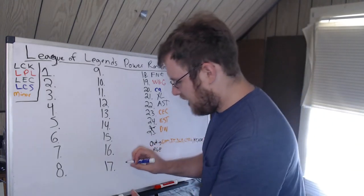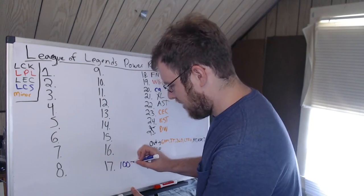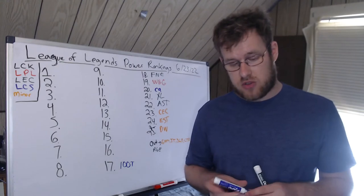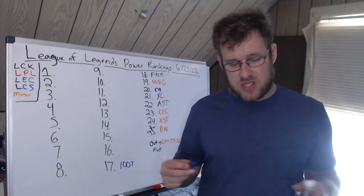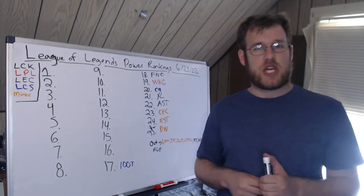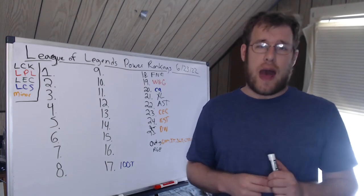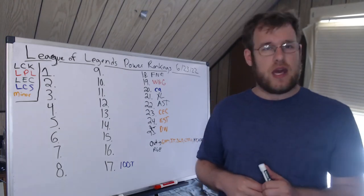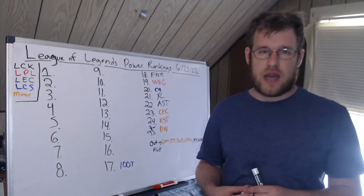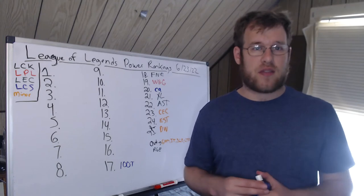100 Thieves are pretty consistent and give you the same thing every week. Beat TSM, beat Dignitas, lost to EG. Ssumday has looked solid, Closer's looked good, Abbedagge still is iffy. That is the problem with this team—Abbedagge I don't think is really carrying his weight.